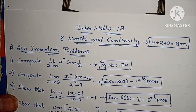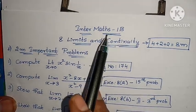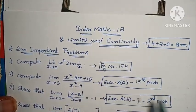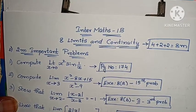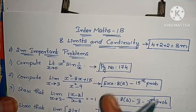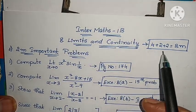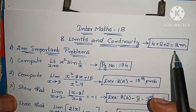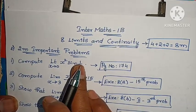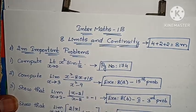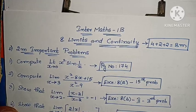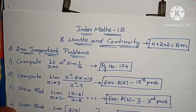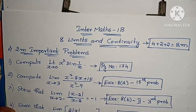Hi, welcome to Parnika Marks. This is the 8th chapter, Limits and Continuity. We have already discussed this chapter. We have 4 plus 2 plus 2, total 8 marks. In this video, we have two important problems. I will tell you about solutions to questions and share the link in the description.